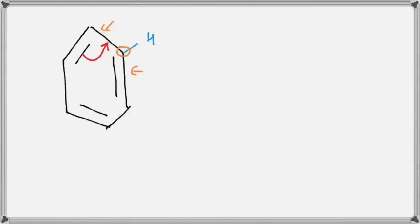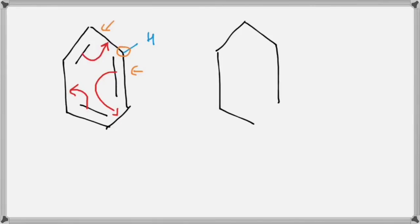So what we will do is shift this double bond further, and with the same logic this double bond at the bottom will shift to the left. The resonance structure we end up with has the bonds exchanging their positions, and we get something like this. That is the resonance structure for benzene.